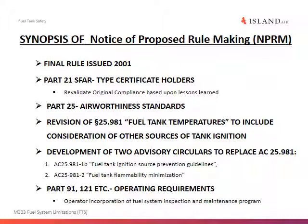This slide shows the course of events from when the rule was issued in 2001, down through the type certificate holders' evaluations of their aircraft, the changes in airworthiness standards, the issuance of advisory circulars, and finally down to the operating requirements.